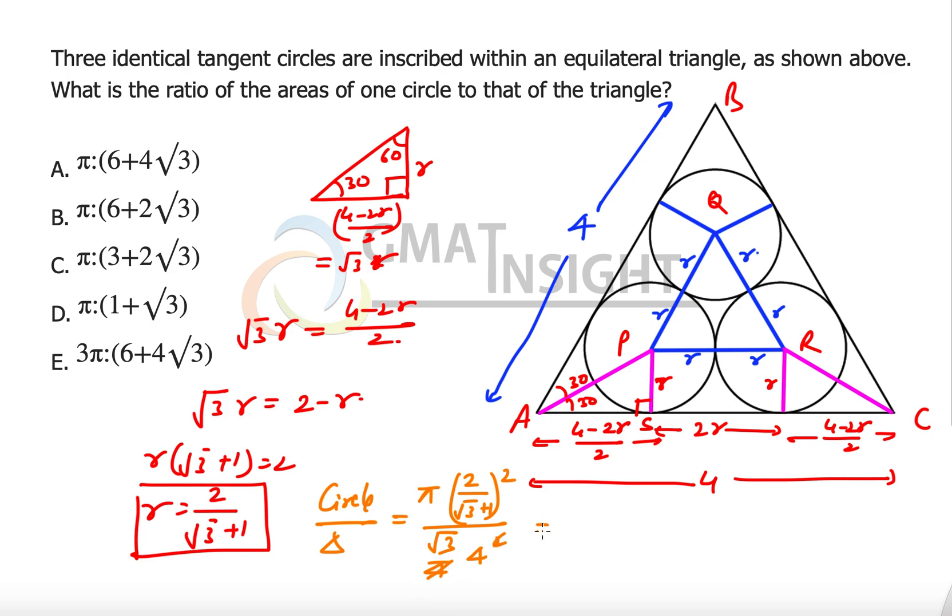Let's quickly simplify this expression. This becomes pi times 4 divided by root 3 plus 1 whole squared, times root 3 times 4. This 4 cancels out further, so we have pi in the numerator.